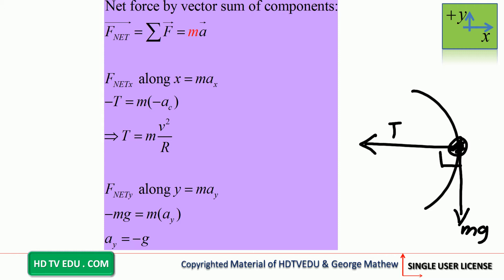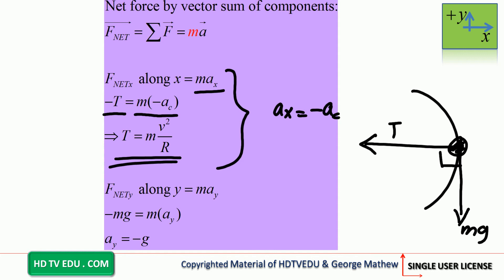Net force along the horizontal equals mass times acceleration along the horizontal. The force along the horizontal is tension. Is it to the right or to the left? It is to the left. We define positive x as to the right, so the sign of tension should be negative T. So, negative T equals mass times acceleration along the horizontal. Acceleration is towards the center, to the left, so we choose negative, and we get mass times acceleration towards the center. Acceleration towards the center equals v squared over r.